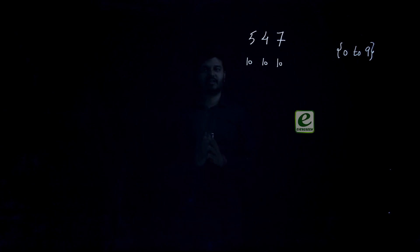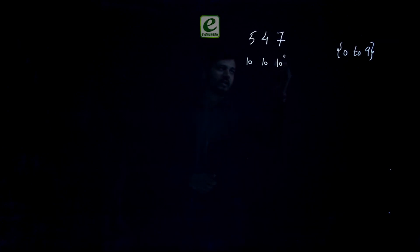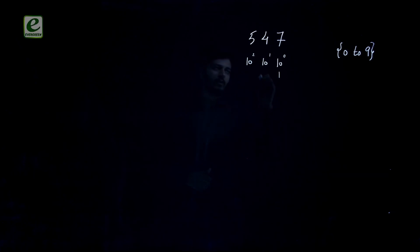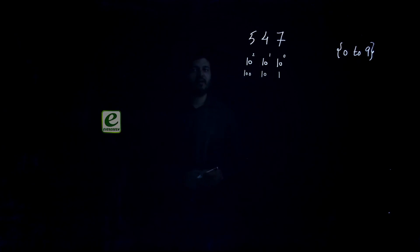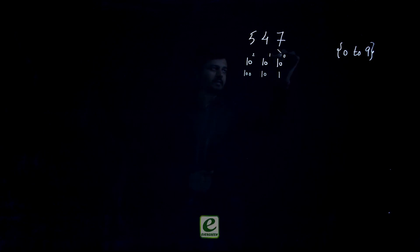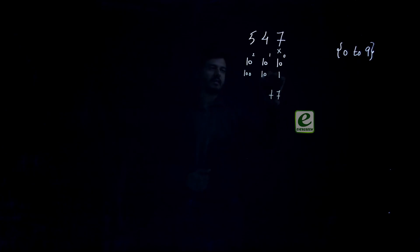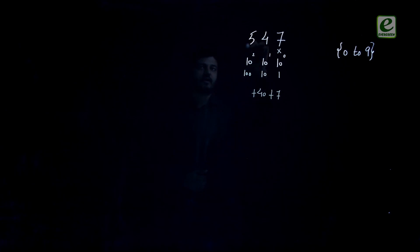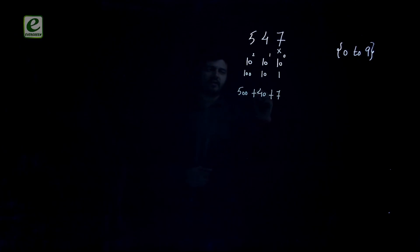Since the base is 10, positions go 10 raised to power 0 = 1, 10 raised to power 1 = 10, 10 raised to power 2 = 100. For example, 547 rupees means: 7 times 1 = 7, plus 4 times 10 = 40, plus 5 times 100 = 500, which totals 547.